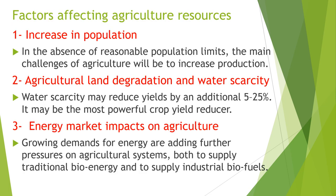Factors affecting agriculture resources include: first, increase in population — in the absence of reasonable population limits or with high rates of population increase, the main challenge is to increase agricultural production. Second, agricultural land degradation and water scarcity — water scarcity may reduce yields by an additional 5 to 25%, making it one of the most powerful crop yield reducers. Third, energy market impacts — growing demands for energy create additional pressures on the agricultural system, both to supply traditional bioenergy and industrial bioenergy.